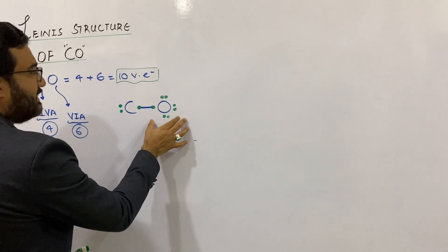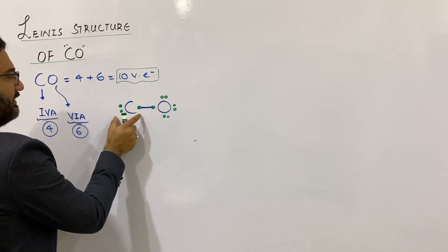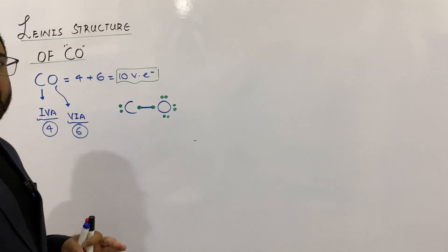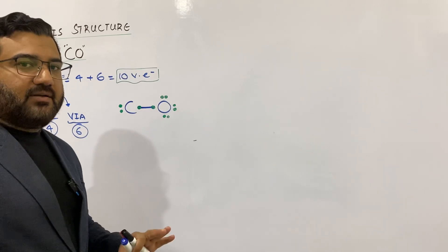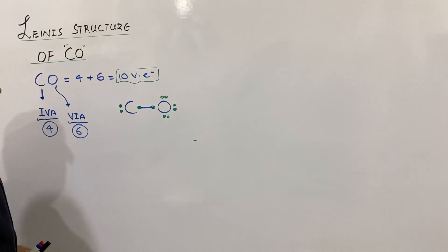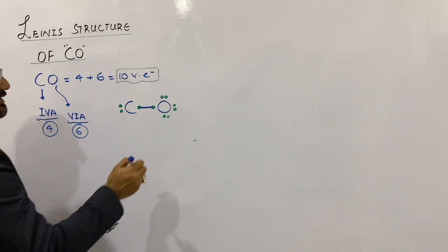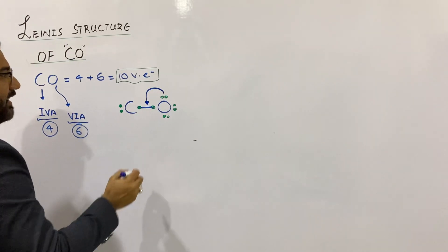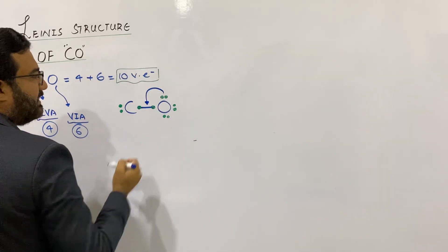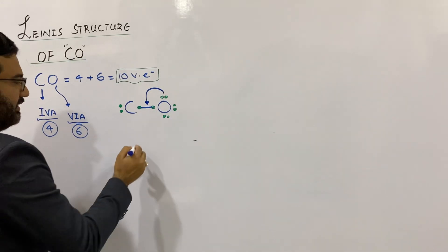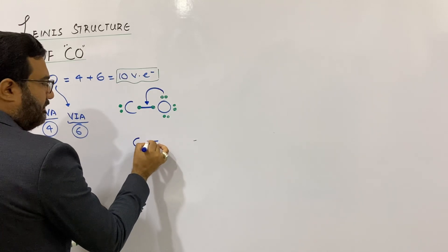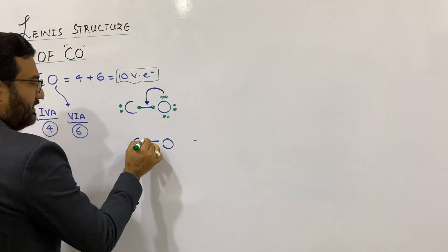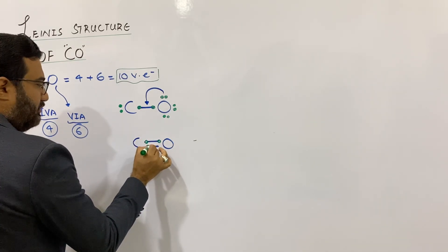Now the octet of oxygen is completed. Let us calculate how many electrons are in the valence shell of carbon — they are 1, 2, 3, 4. It means the octet of carbon is yet incomplete. In order to complete the octet of carbon, oxygen will use its lone pair of electrons to form multiple bonds, and one lone pair will be used so that the single bond is changed to a double bond. Hence C double bond O, and now there will be four electrons in the form of two bond pairs.